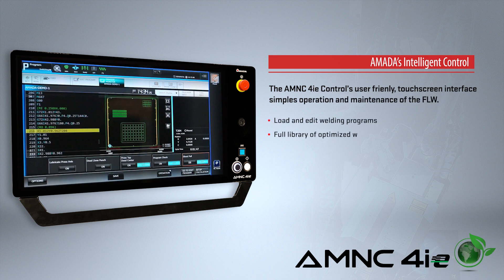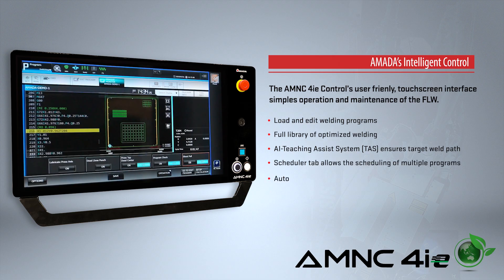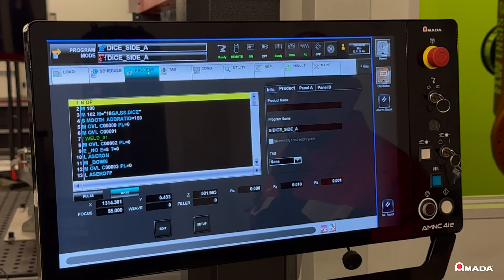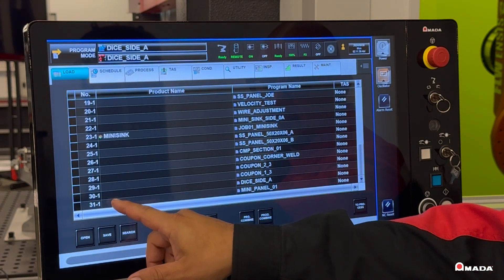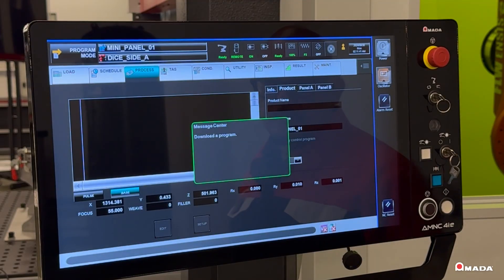NC programs can easily be loaded from your company's network. The control stores a full list of welding conditions that are optimized to process a variety of materials. Users can also enable a schedule of parts to reduce delays between jobs and increase machine productivity.